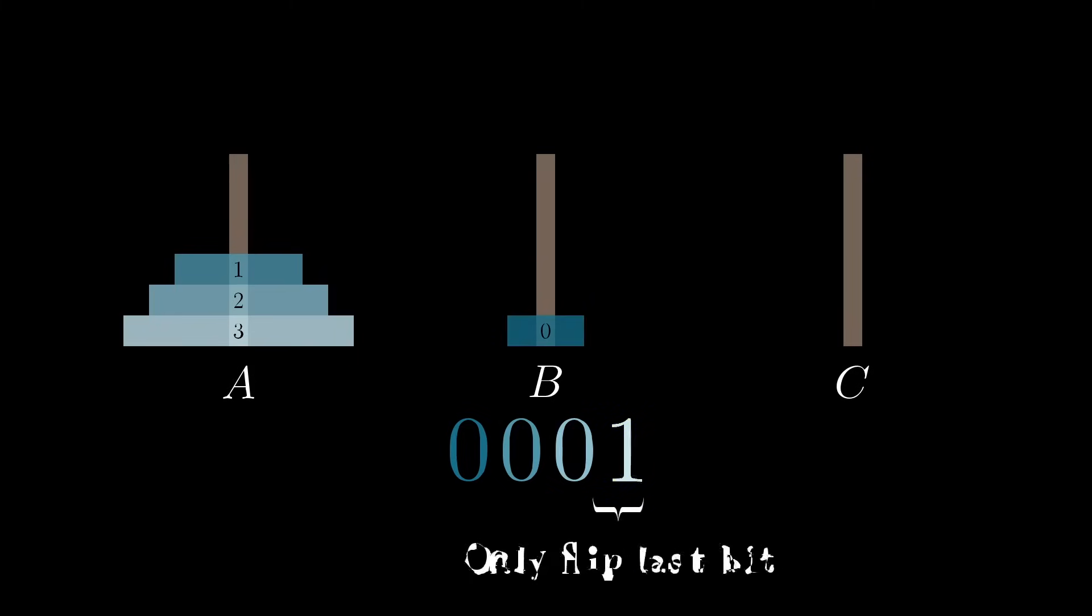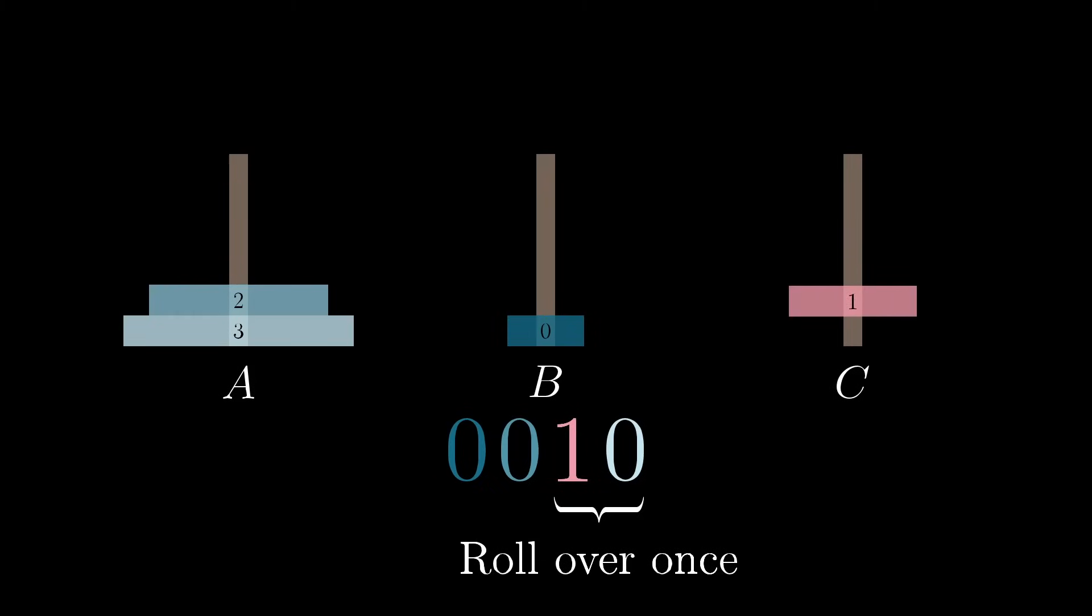If, in your binary counting, you roll over once to the 2's place, meaning you flip the last 2 bits, you move disk number 1. Where do you move it, you might ask? Well, you have no choice. You can't put it on top of disk 0, and there's only one other peg, so you move it where you're forced to move it.